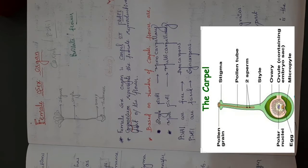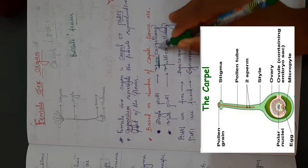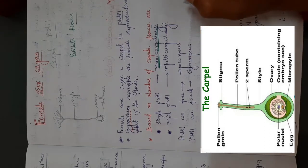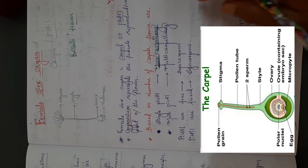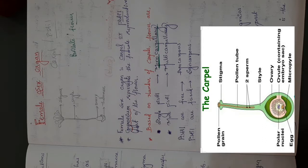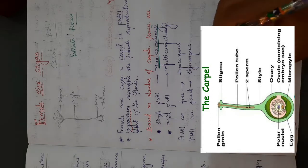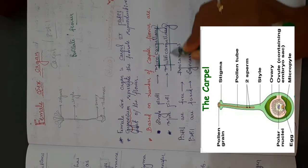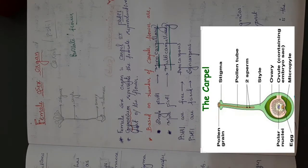In some plants, only a single pistil is present; those flowers are called as monocarpellary. If only one carpel is present in that flower or plant, those species are called as monocarpellary. Monocarpellary means those are the plants which have only one carpel in their flower.